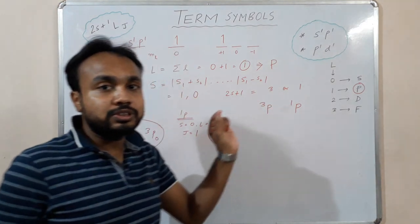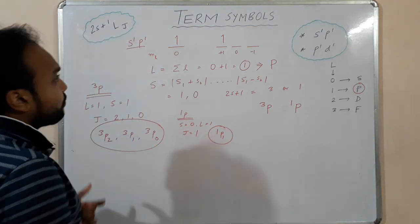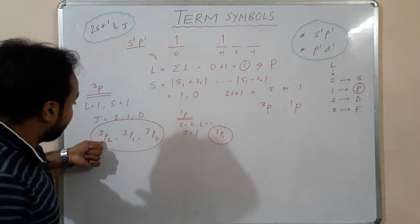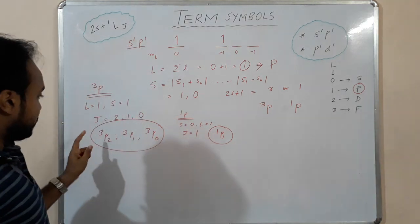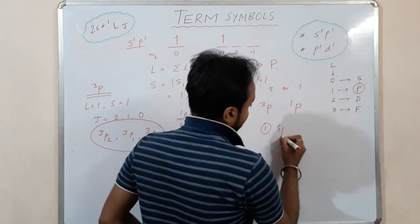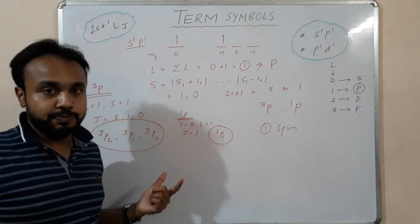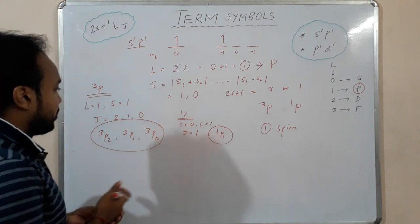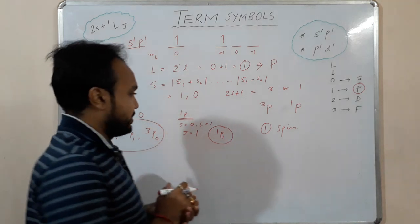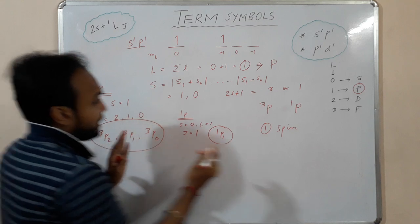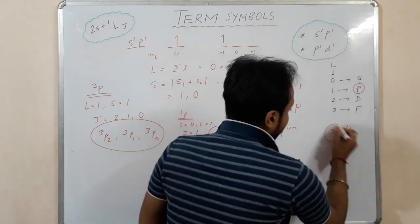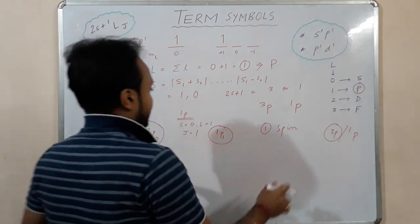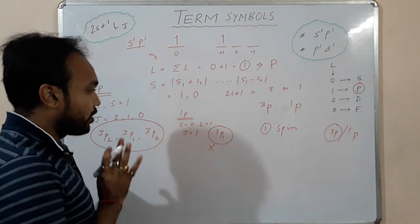Now if we are asked to find the ground state term symbol for the s¹p¹ system, the first thing to look at is the spin. If we have a higher spin, that term will be in the lower energy state — the ground state. Out of ¹P₁ and the ³P terms, ³P will be in the lower energy state because of the higher spin value. So ¹P₁ will not be the ground state term symbol.